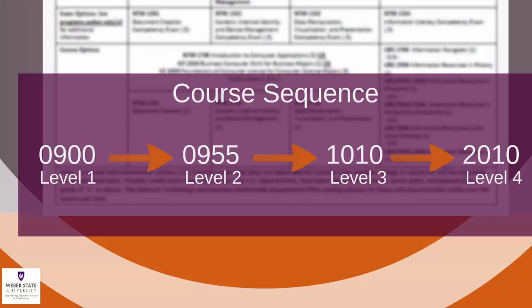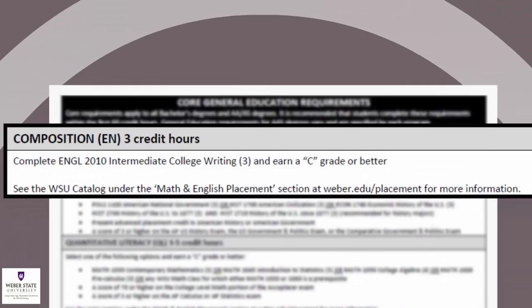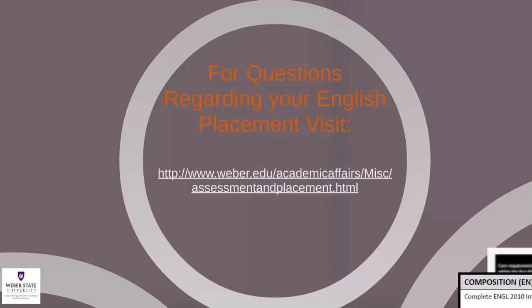Please note that English 900 and 955 are considered developmental courses and the credits and grades earned in these courses do not count toward your overall credits for graduation or toward your degree. All classes must be passed with a C or better. If you have questions on your English placement, please see the assessment and placement policy on the website shown on your screen.